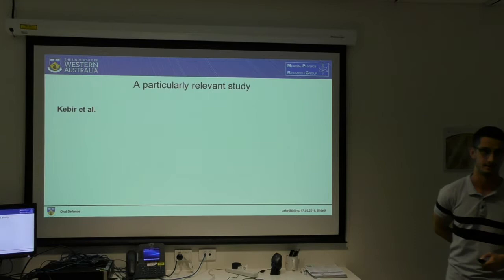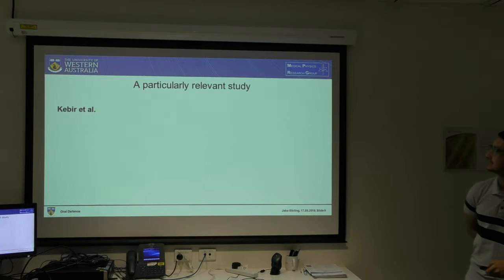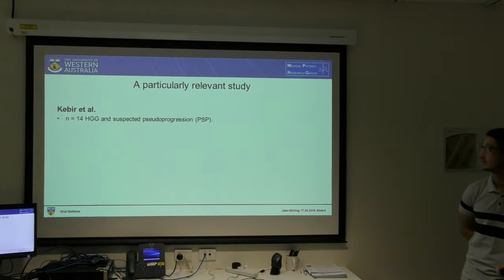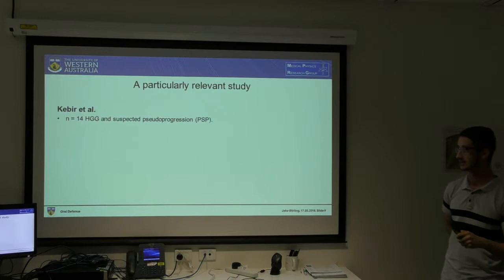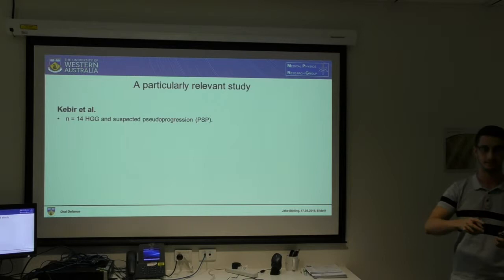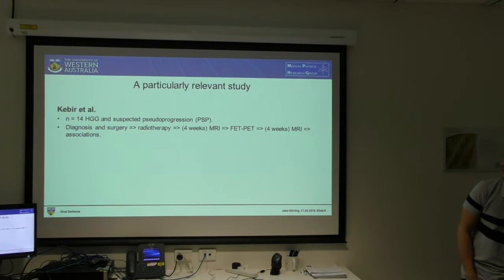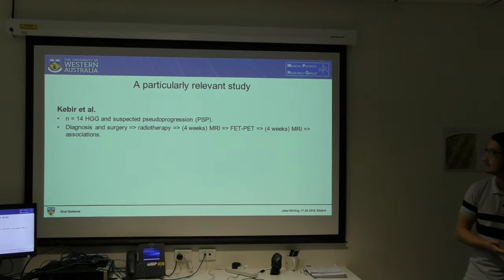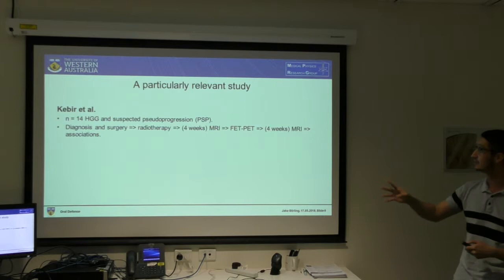A particularly relevant study is one by Kiber et al. He took a sample of 14 patients with high-grade glioma — 11 glioblastoma and 3 grade 3 glioma — who had suspected pseudoprogression. He wanted to use radiomics to detect whether it was true progression or pseudoprogression. Patients got diagnosed, had surgery, then radiotherapy. Four weeks later they had an MRI showing the suspected pseudoprogression, and also underwent a routine FET-PET scan. Four weeks after that, a follow-up MRI diagnosed whether it was pseudoprogression or true progression. The radiomics were then associated with the outcome.